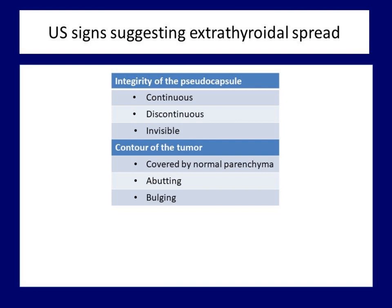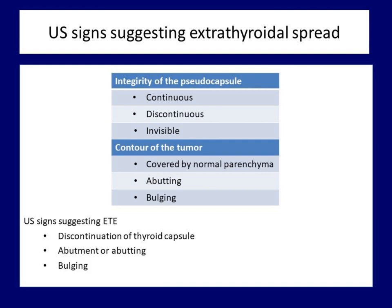Perhaps the most important consideration concerns nodules which are covered by normal parenchyma — in such cases, the likelihood of extrathyroidal spread is practically zero. The possibility of extrathyroidal growth can be considered if the capsule is discontinuous or invisible and the contour is abutting or bulging. These are the possible ultrasound signs of extrathyroidal extension.